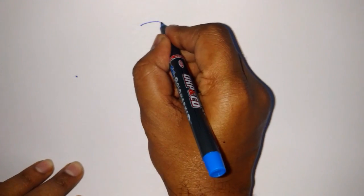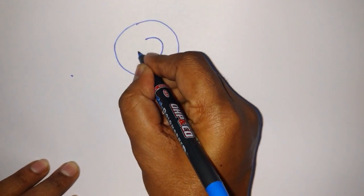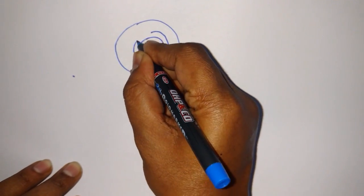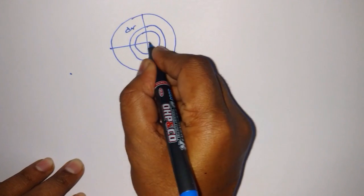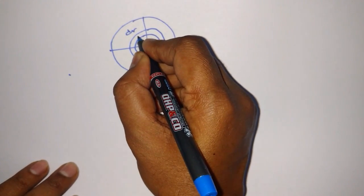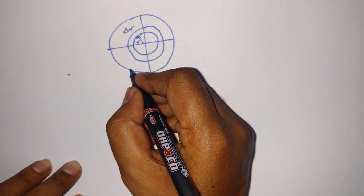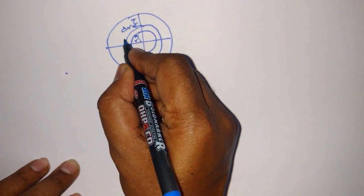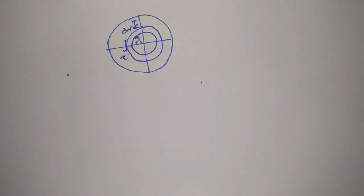Don't worry, you will understand each and everything I am sharing with you. So first of all, draw a circular cross-section. This circular cross-section has a small elemental ring of radius r and thickness dr. From here to here it is dr. Shear stress tau is acting on this element.